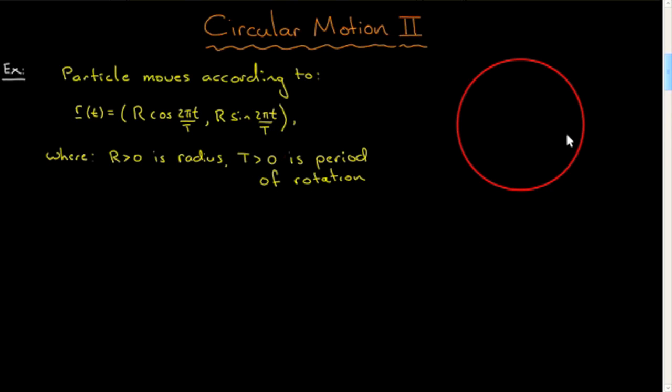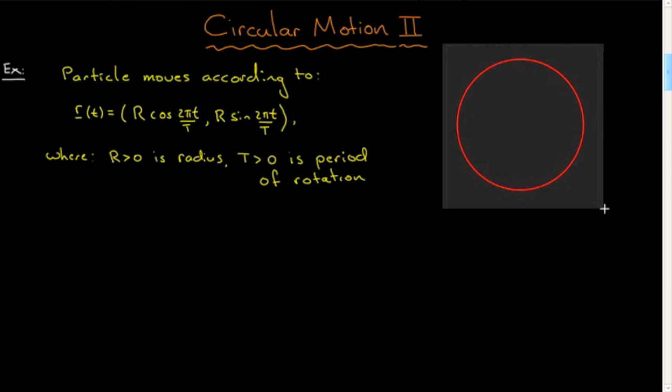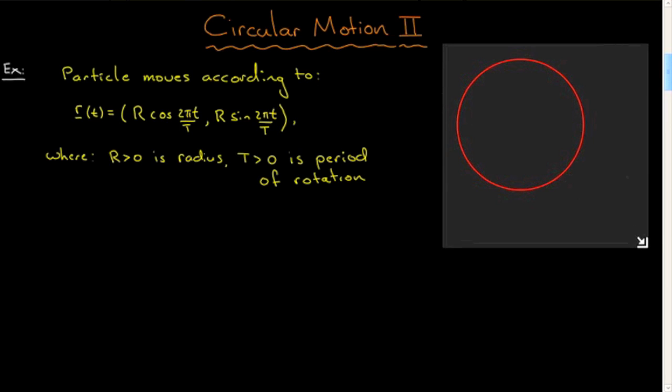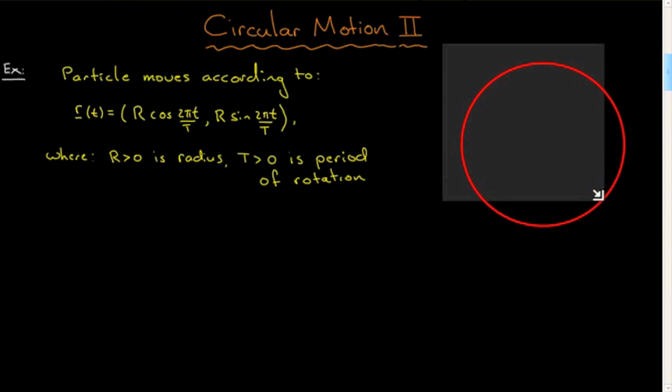So R dictates the radius of this path, and the point of having it explicitly in the parameterization is that I can effectively consider the dynamics of all circles as simply a parameter in this parameterization, a constant.